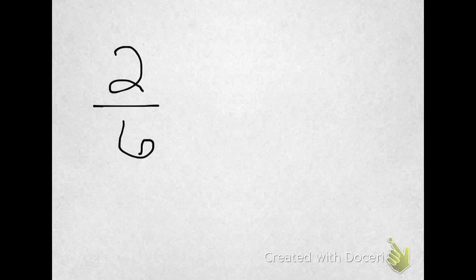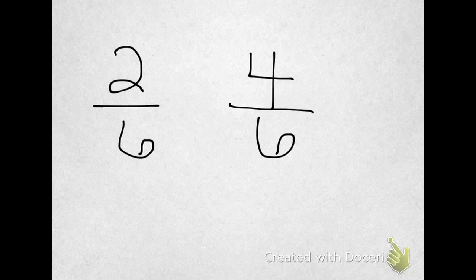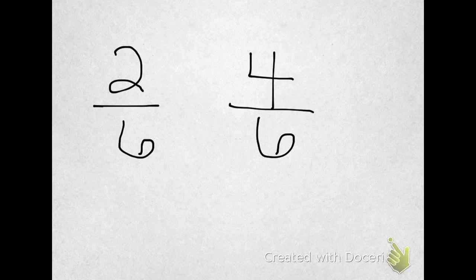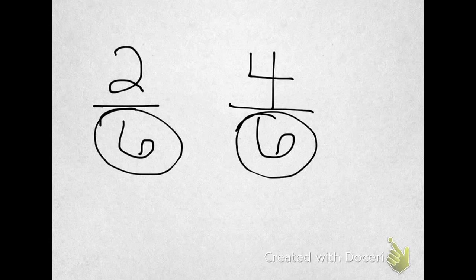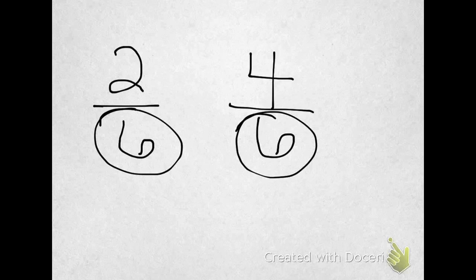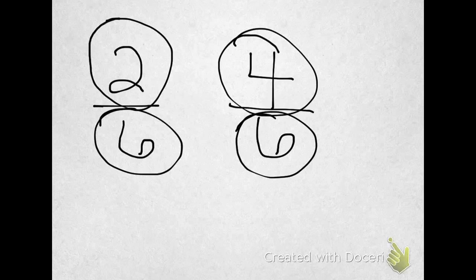Let's look at the fractions 2 sixths and 4 sixths. What I want to know is how are they the same and how are they different. Their denominators are the same, which means they are cut up into the same exact equal number of pieces. How they are different is their numerators are different. This one is 2 and this one is 4.